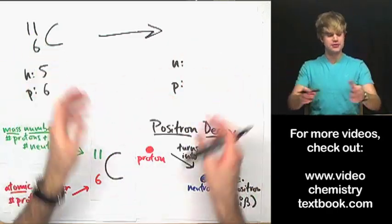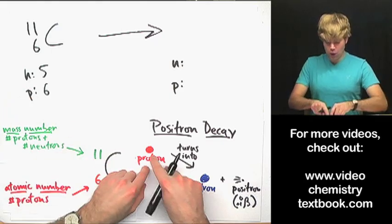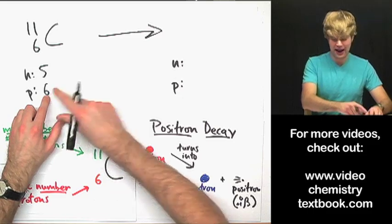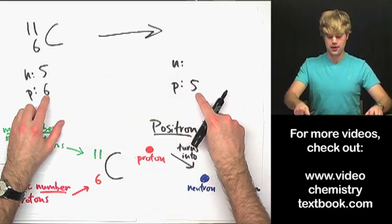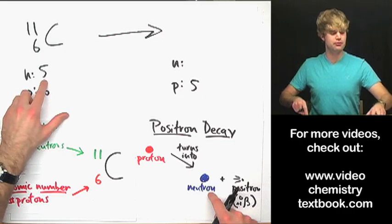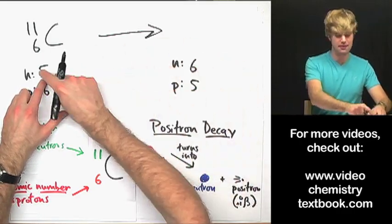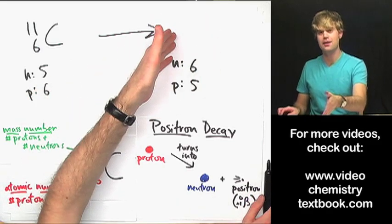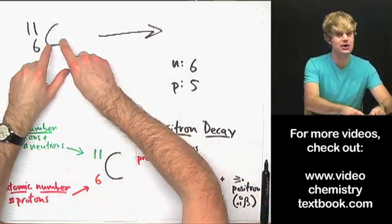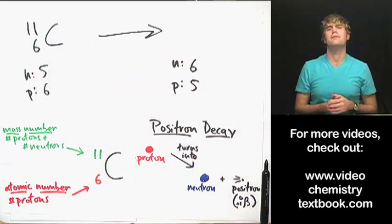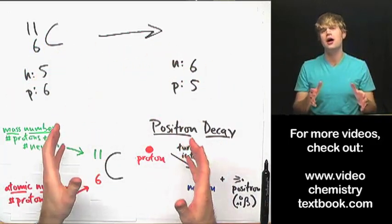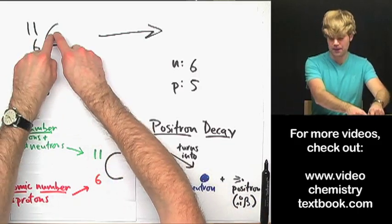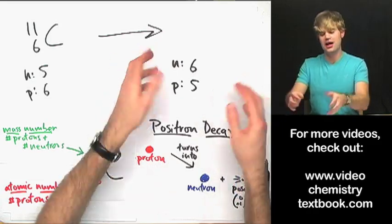What's going to happen after positron decay? One of these protons is going to turn into a neutron. So I'm going to have one fewer proton, but since I've got a new neutron in the process, my neutron number is going to go up from five to six. Now I want to write the chemical symbol of what I'm going to end up with — and it's not going to be carbon. It's going to be a new kind of atom, because the number of protons determines what kind of atom it is. Here I had six protons so it was carbon, but now with five protons it's going to be a different element.